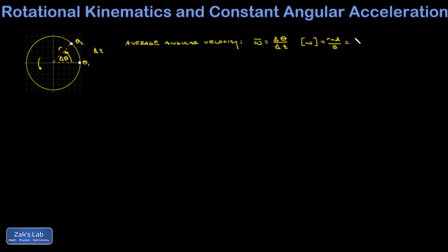Now radians are technically unitless. So you'll often see this written as 1 over second or even a second to the negative first power. We can define instantaneous angular velocity as just being a small time limit of this, in other words, a time derivative.